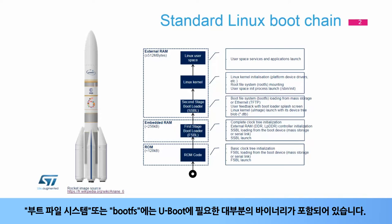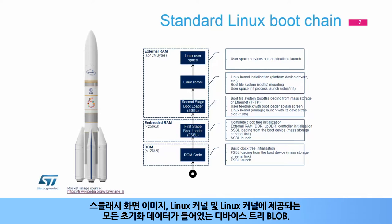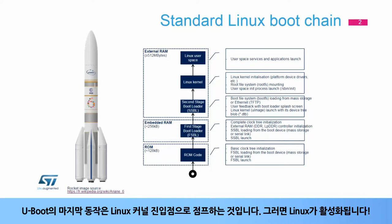It is also often used to display an image during the startup process called the splash screen. The boot file system, or boot FS, contains most of the binaries needed by U-Boot: the splash screen image, the Linux kernel, and the device tree blob that contains all initialization data given to the Linux kernel. The last action from U-Boot is a jump to the Linux kernel entry point, and Linux is then alive.